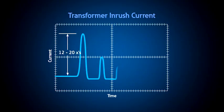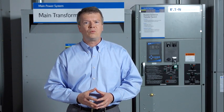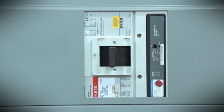Inrush current must be considered when evaluating circuit protection. The inrush current when you energize a transformer is typically 12 times, or even up to 20 times for today's high efficiency transformers, for the first half cycle as shown in this figure. Often when one or multiple transformers are energized, an upstream circuit breaker may trip if the instantaneous setting is too low. This is a common problem in data centers when multiple PDU transformers are energized together.